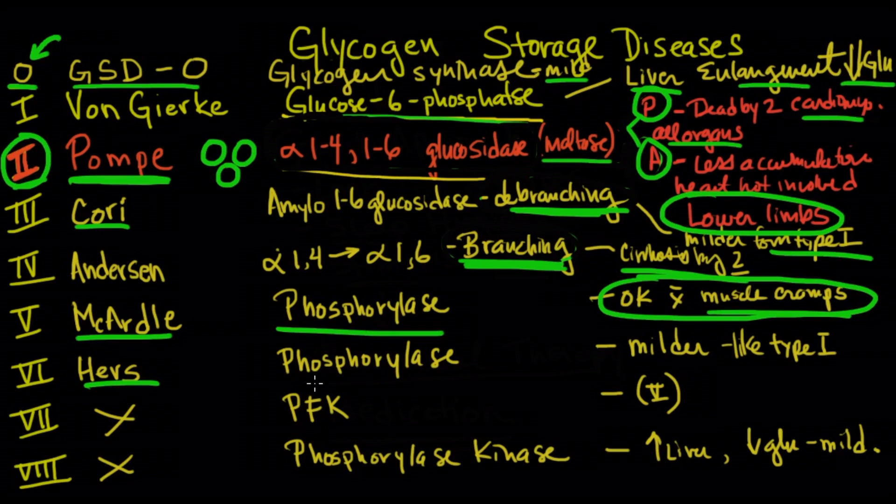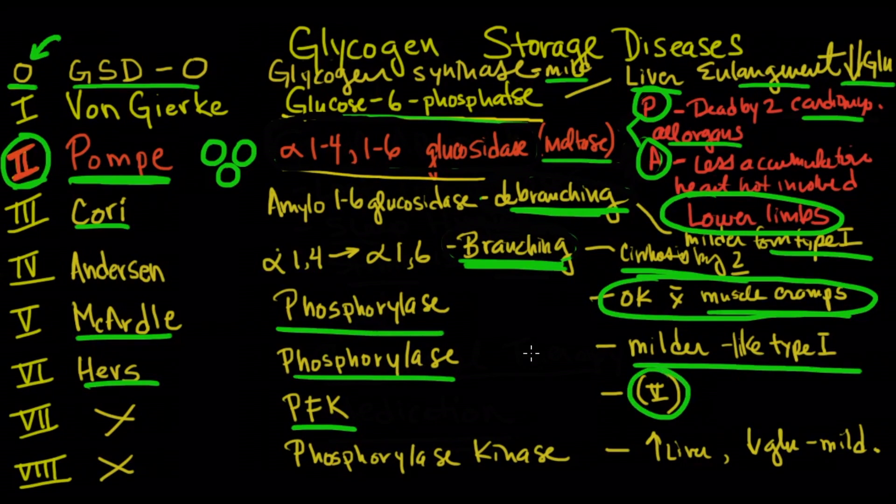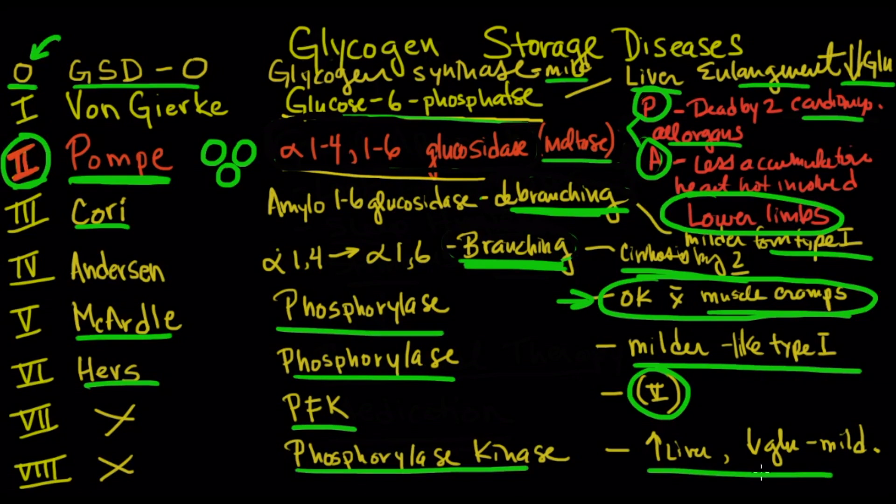With Hers, it's also phosphorylase, but it's a much milder form of type 1. And phosphofructokinase is very similar to type 5, which we've got up here. And then finally, phosphorylase kinase, again, it's like type 1. You do have enlarged liver. You do have decreased glucose like you do in type 1, which we have here, but it's also a milder form.